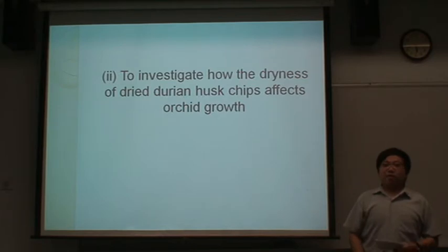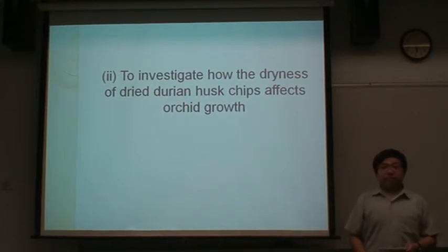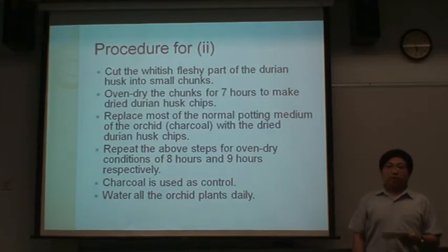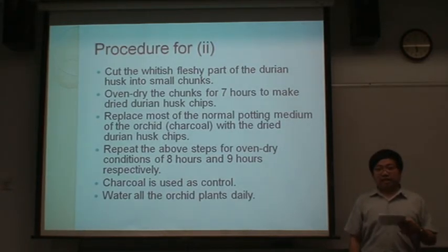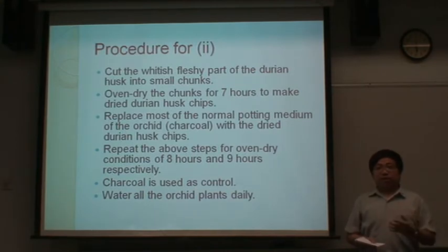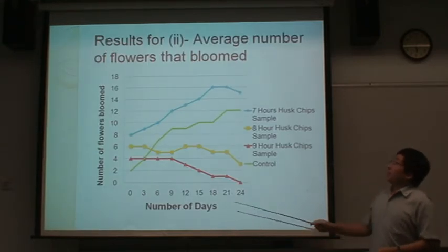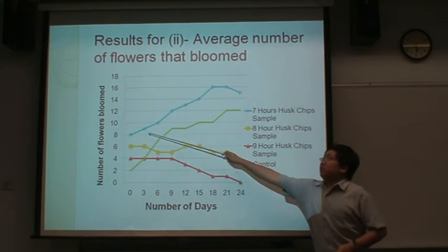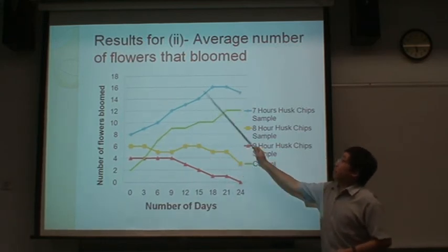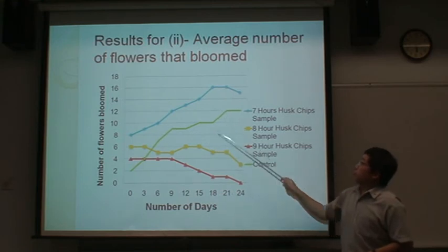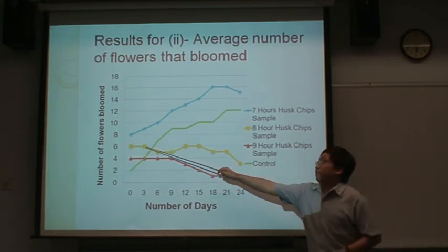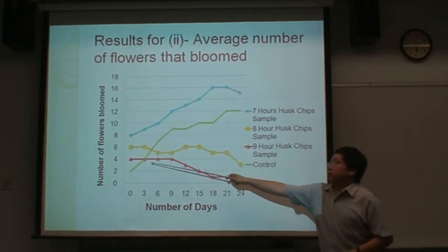Now we have the third part of the project, which investigates how the dryness of the Durian Husk chips affects plant growth. The procedure is similar to the second part, except we have 3 samples with Durian Husk chips dried for 7 hours, 8 hours, and 9 hours respectively. From the results, we can see an increasing trend for the average number of flowers that bloom for the 7-hour sample and the control, whereas there is a decreasing trend for the 8-hour and 9-hour samples.